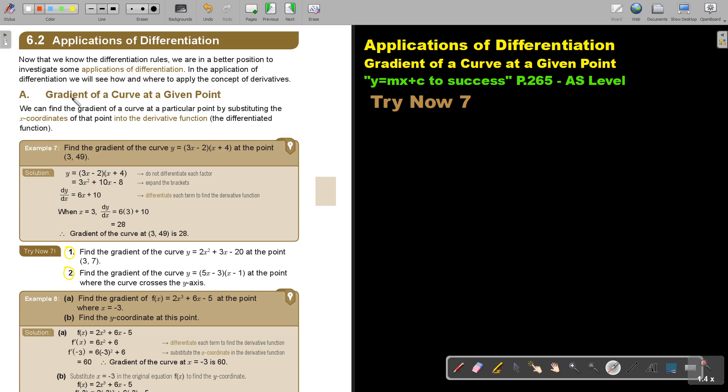First one we're going to focus on is the gradient of a curve at a given point. We can find the gradient of a curve at a particular point by substituting the x-coordinate of that point into the derivative function. The derivative function, remember, is the differentiated function.